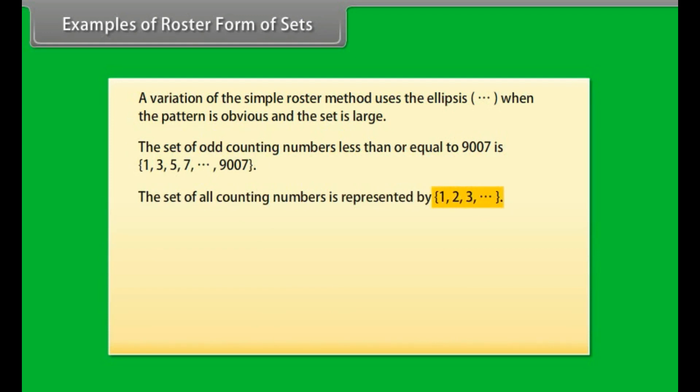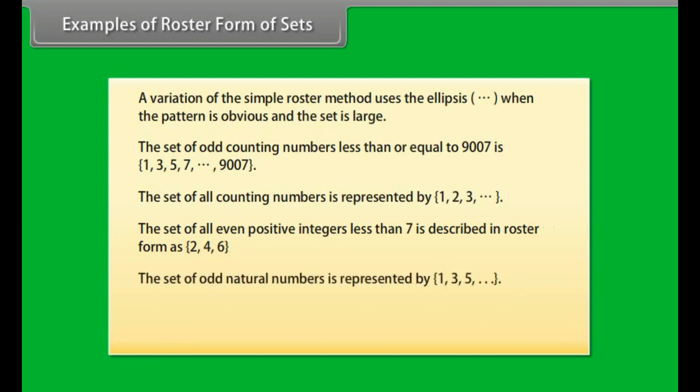Set of all counting numbers is represented by {1, 2, 3...} and so on. The set of all even positive integers less than 7 is described in the roster form as {2, 4, 6}.